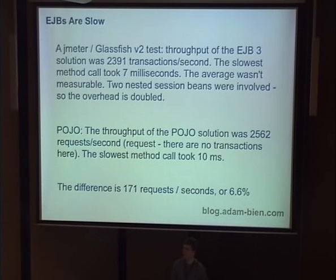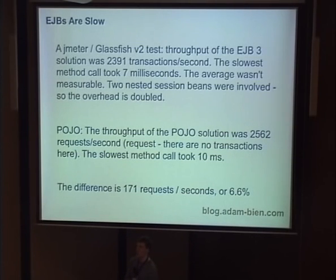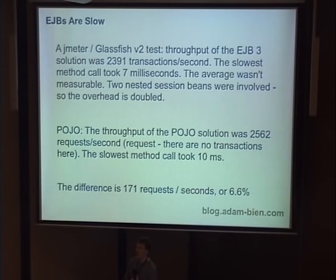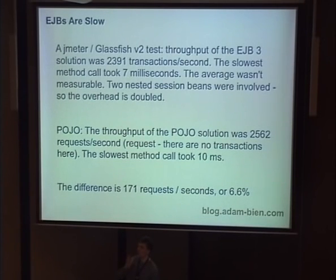How about memory consumption? Most applications in WLS 8 had a constraint in operations to use 256 megabyte RAM. On GlassFish I use at most 500. On huge projects where we need to cache everything in memory, we need more. But there is almost no difference between EJB and POJOs. If the application server uses dynamic proxies, you get several proxies for one instance, so you need more memory.